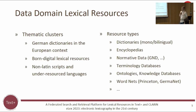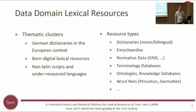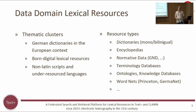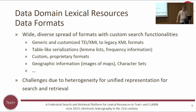Many of the large German data providers are part of this project, providing a wide variety of resource types: dictionaries, encyclopedias, normative data like the GND, terminology databases, ontologies, word nets, and more. Lexical resources are also split into semantic clusters like German dictionaries in the European context, digital lexical resources, online dictionaries, non-Latin scripts, and under-resourced languages.